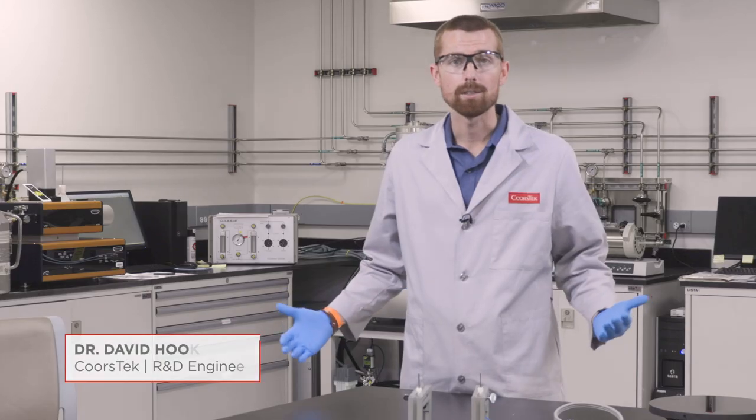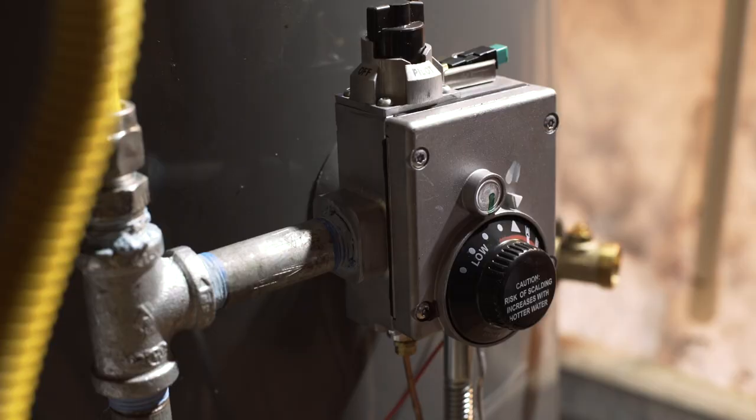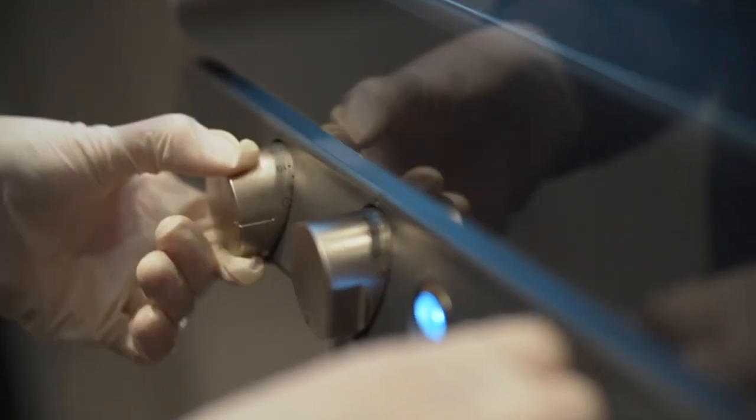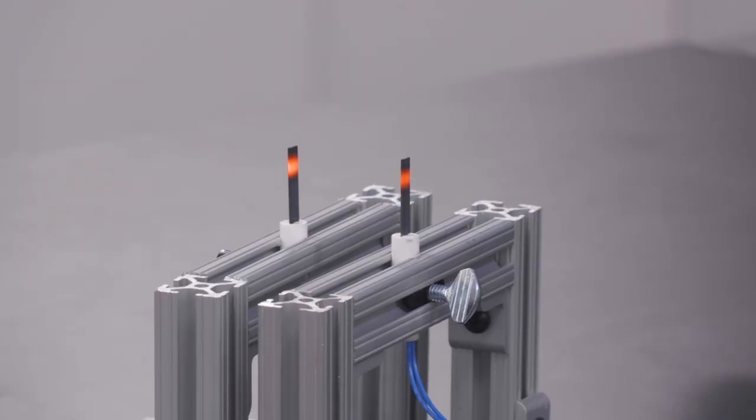These are ceramic igniters. Corstec makes a ton of them, and you probably have a bunch in your home. They're used in your furnace, in your water heater, even your gas range. These igniters reach a temperature of 1,500 degrees within a matter of seconds. You turn it on, it glows hot, and the gas stream ignites immediately.